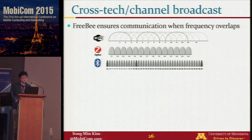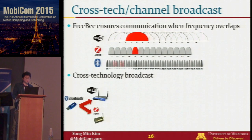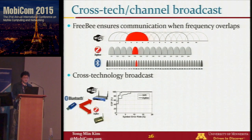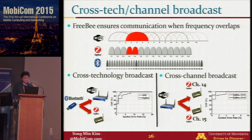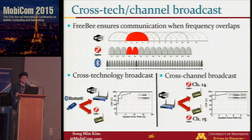Another feature of Freebie is cross-technology and cross-channel broadcast. In cross-technology broadcast, Bluetooth sends concurrently to WiFi and ZigBee using the overlapping frequency band. In cross-channel broadcast, WiFi — using its wider bandwidth compared to ZigBee — can send concurrently to ZigBee devices operating on different channels, such as channels 14 and 15.